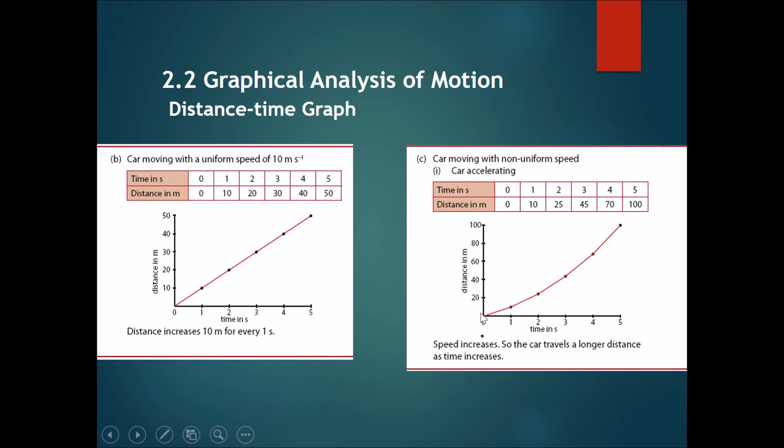If you plot the graph over here—0, 0; 1, 10; 2, 25, and so on—you will see that when a car is accelerating on a distance-time graph, the graph would curve upwards. This is compared with the previous one where it was a uniform speed. When it was a uniform speed, it will be a straight diagonal line.